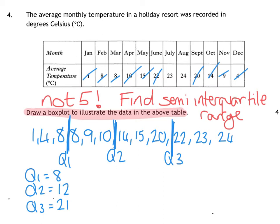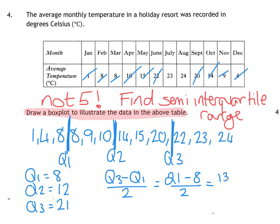If I want the semi-interquartile range, the interquartile range is Q3 minus Q1. Semi means you halve it, so that's your formula. We're going to do 21 takeaway 8 all over 2. 21 takeaway 8 is 13, so 13 over 2 gives you 6.5. So drawing box plots is not National 5 anymore, but the semi-interquartile range and quartiles is.